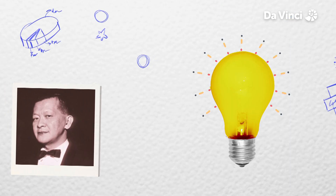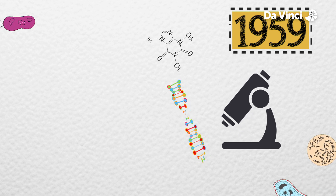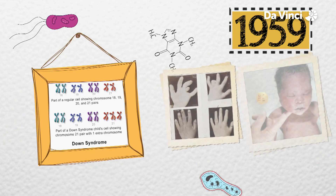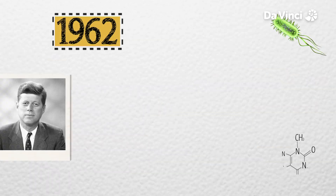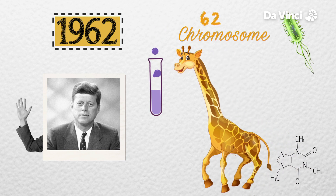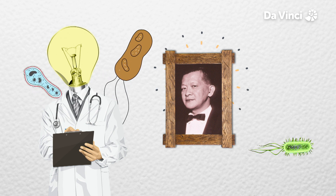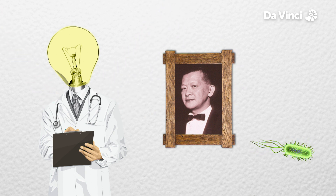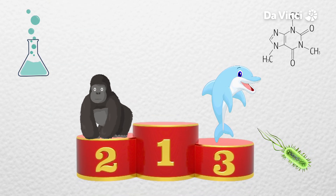After his astounding discovery, chromosomal disorders were understood in a much better way. For example, in 1959, it was discovered that people afflicted with Down syndrome have an additional chromosome in their cells. In 1962, President John F. Kennedy presented him with an outstanding achievement award. Incidentally, 62 is also the number of chromosomes in a giraffe. As a result of Joe Hin Tjio's discovery, we now know that we have two more chromosomes than a dolphin, but two less than a gorilla, and strangely, also the potato.